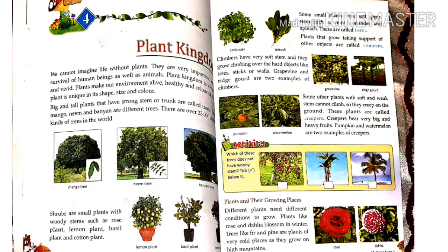Hello everyone, welcome. This is our EVS class 4, and in this class we will read Chapter 4: Plant Kingdom. We cannot imagine life without plants. We can never do our life without plants — they are very important for the survival of human beings as well as animals.